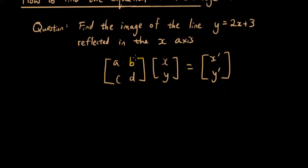Now firstly we want to know what the transformation matrix equals for reflection in the x-axis. So if you guys remember how we can get that is we draw on the Cartesian plane.